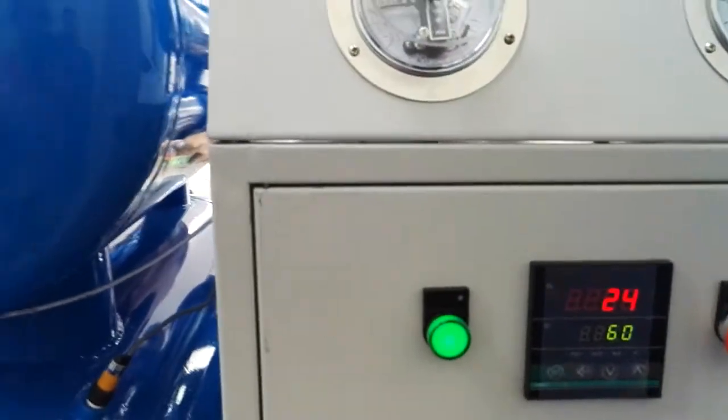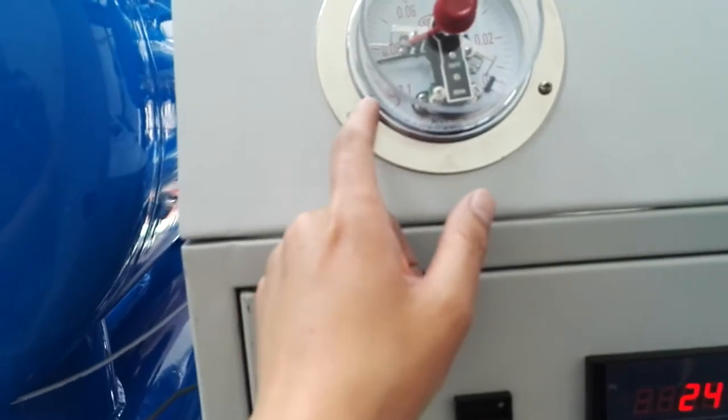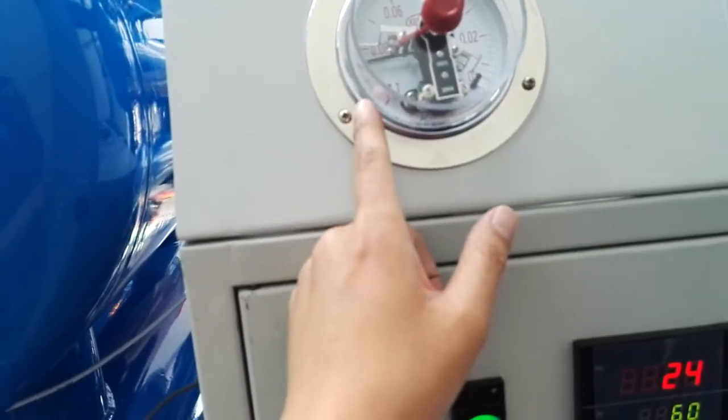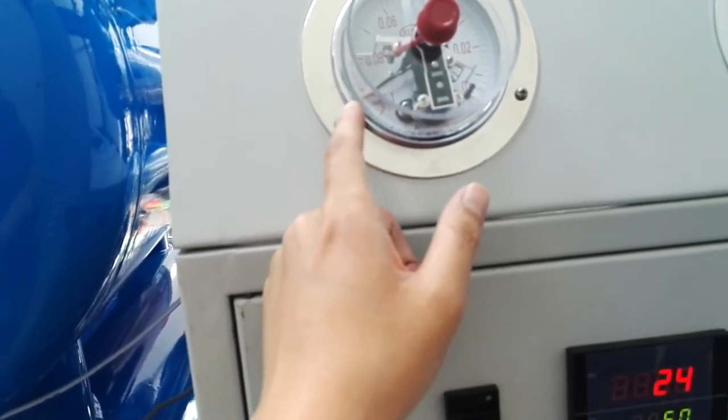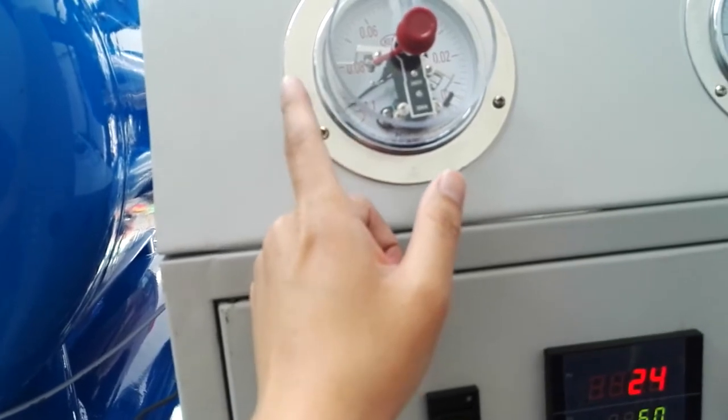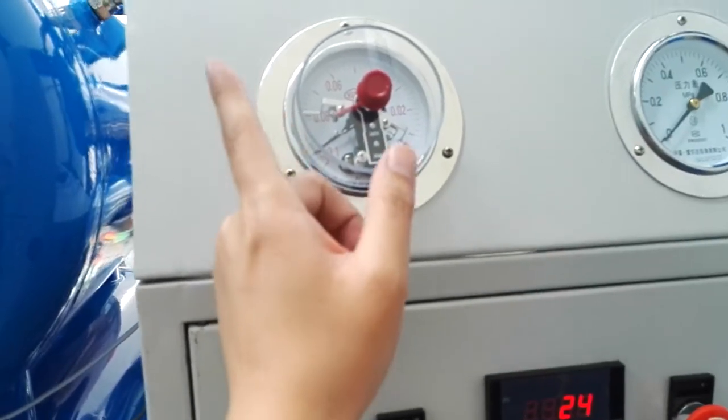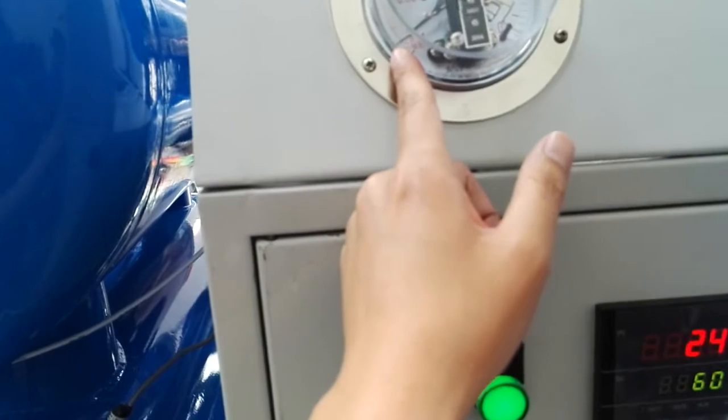We reach the vacuum gauge to the high level, to 0.09, 0.095. Then we can open the inlet and outlet.